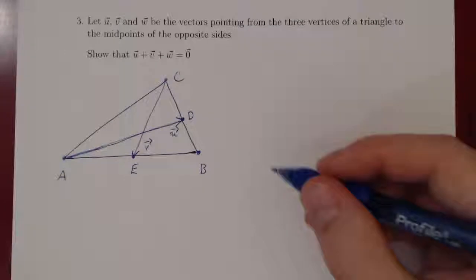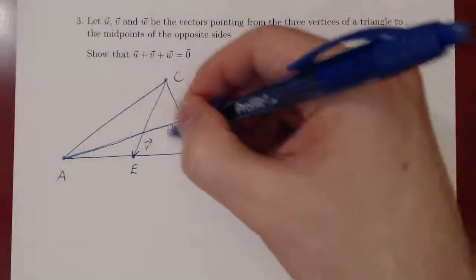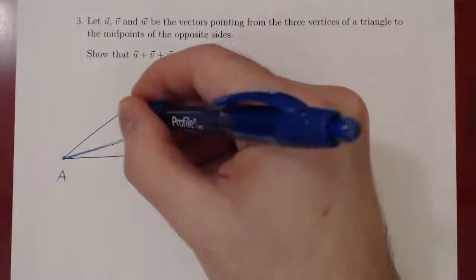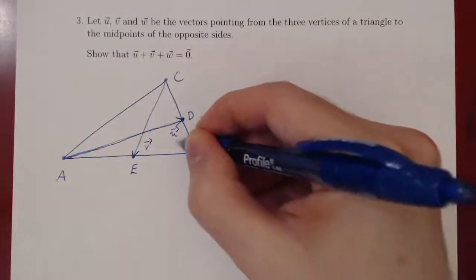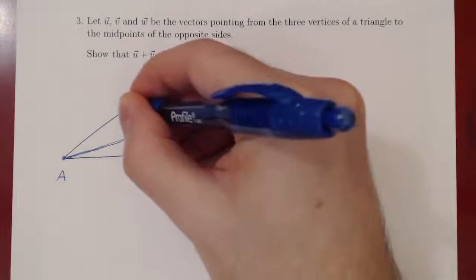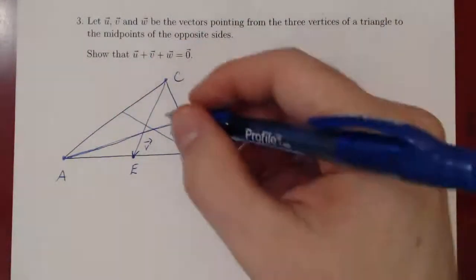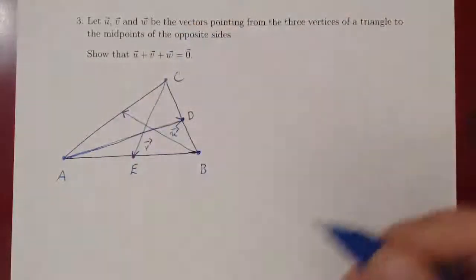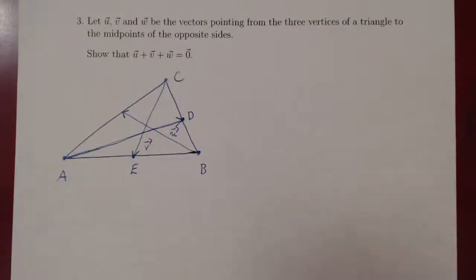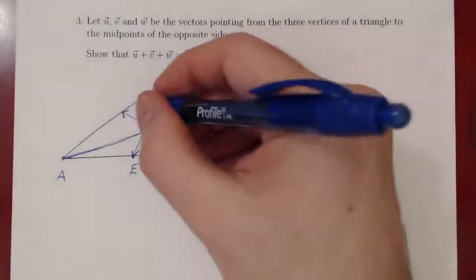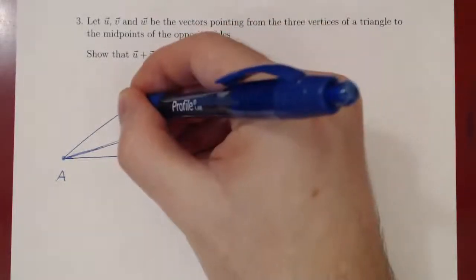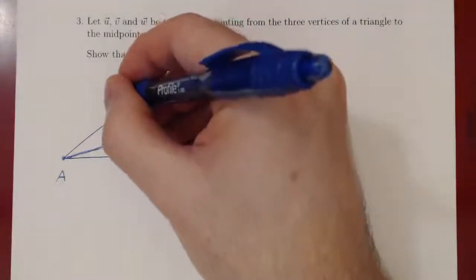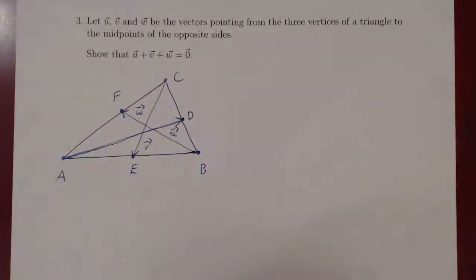And finally we have the vector pointing from B to the midpoint of the opposite side, which is AC. My picture is a little crooked, but it doesn't matter. And suppose we call this vector, the third vector, W. Once again we have a vertex of interest, let's call this vertex F. So that's the picture.